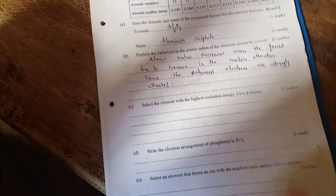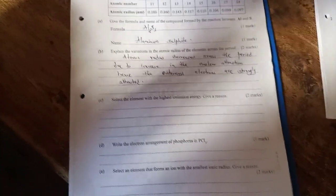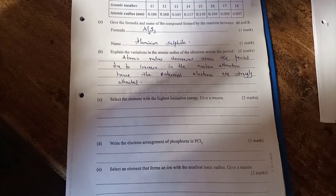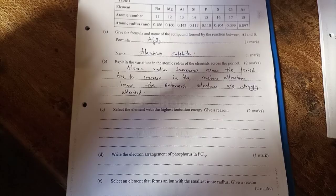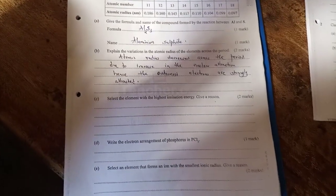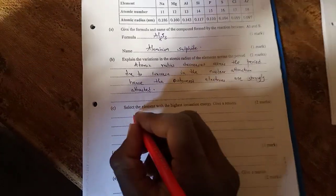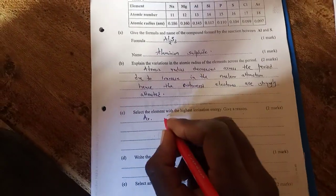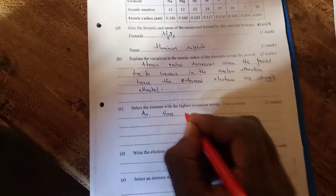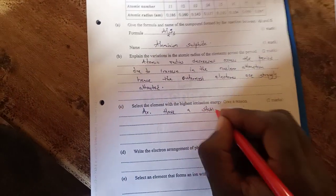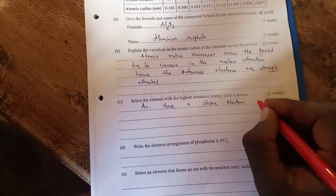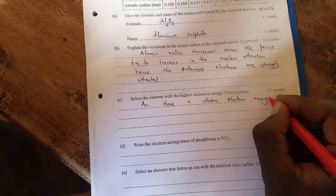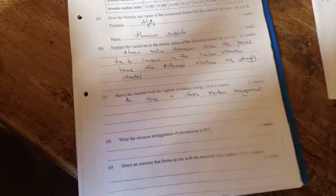Select the element with the highest ionization energy and give a reason. Noble gases have the highest ionization energies since they are stable. We select the element which has a stable octet electron configuration and it is argon. The reason is, it has a stable electron configuration or arrangement. Hence, losing an electron requires much energy.